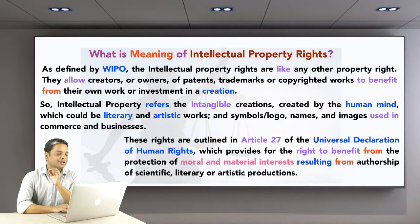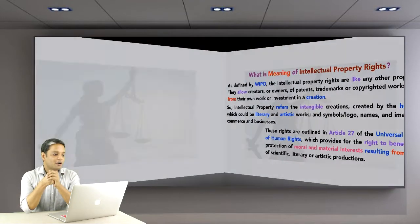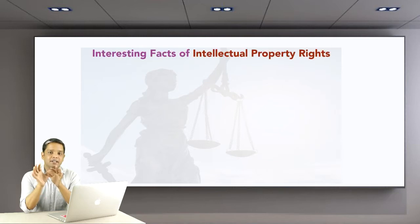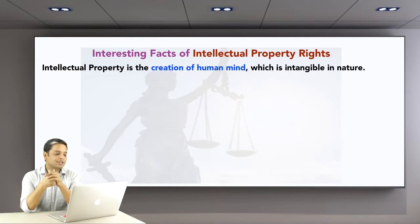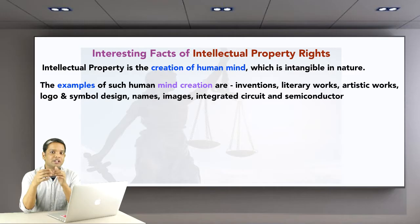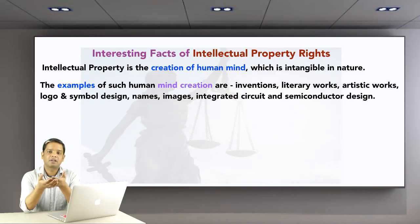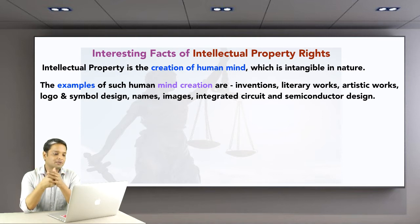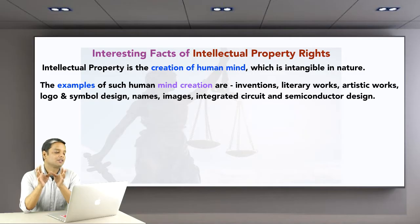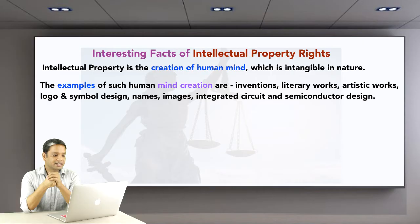Intellectual property is the creation of the human mind and is intangible in nature. Examples of such creations include inventions — like machines or medicines — literary works such as poems, articles, novels, and movie scripts, and artistic works such as paintings, photographs, logo and symbol designs, company names, images, and integrated circuit and semiconductor designs. All these are considered intellectual property.